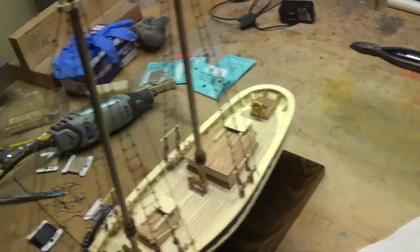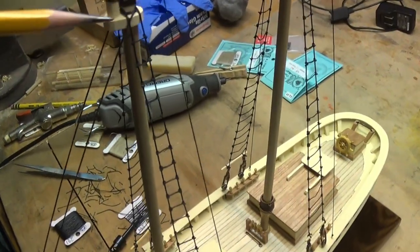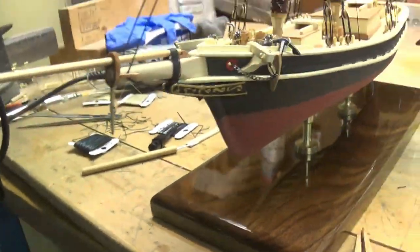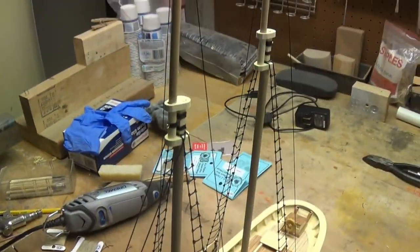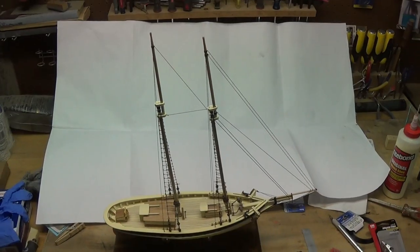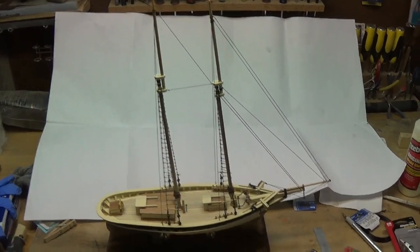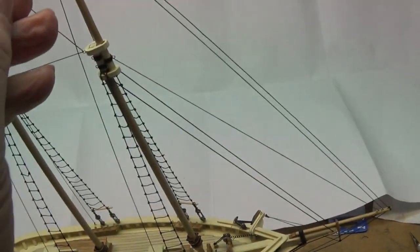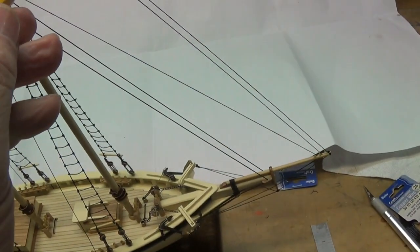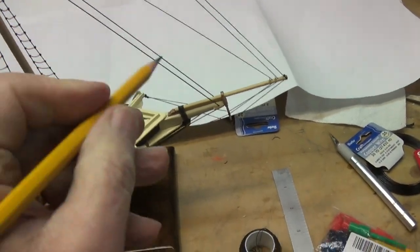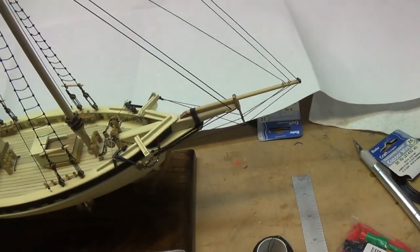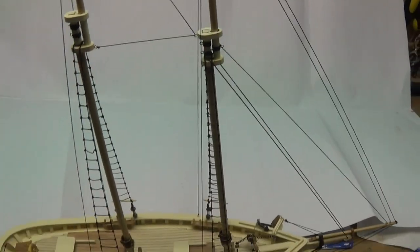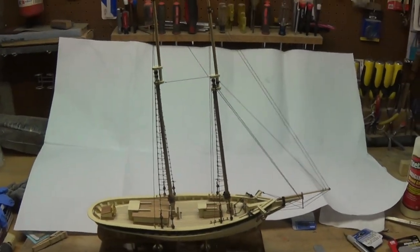I just installed the forestay. The forestay comes up around the top of the foremast and then runs down through the bees and then back to the stem. We've got the forestay, top mast stay in place, the flying jib stay, the jib stay, the foremast stay, and then we have the stays between the two masts here. I think that's just about it for the standing rigging.